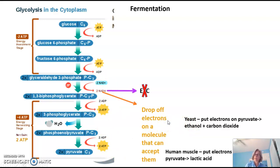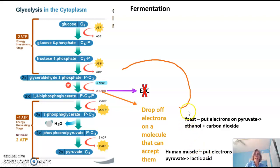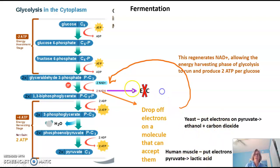Human muscle has a slightly different way to do this. Human muscle takes the electrons in NADH, drops them off on pyruvate, and forms a different waste product: lactic acid. In each of these cases — putting the electrons on pyruvate to form ethanol and CO2, or putting them on pyruvate to form lactic acid — NAD+ is formed, which allows cells to keep running glycolysis and produce two ATPs per glucose.